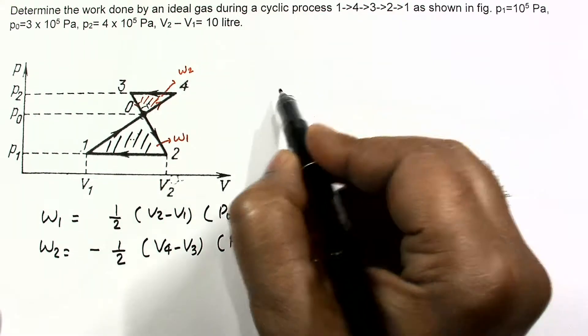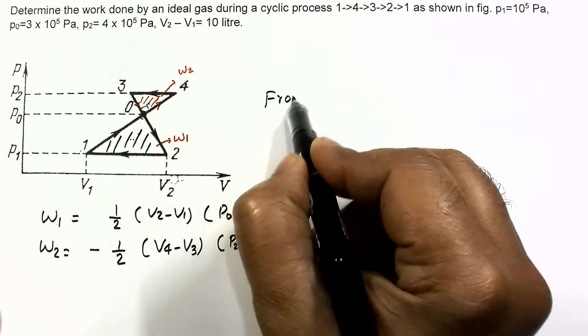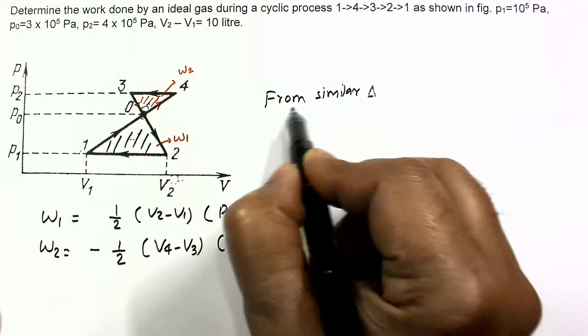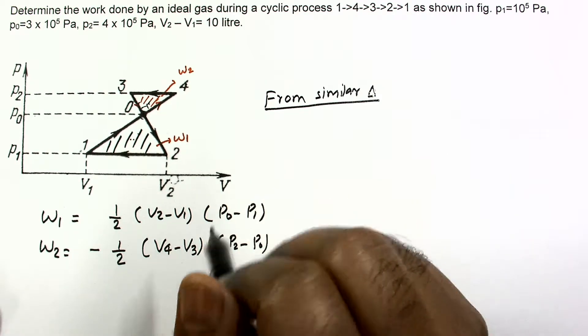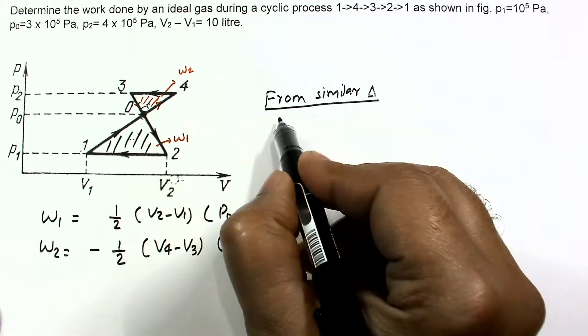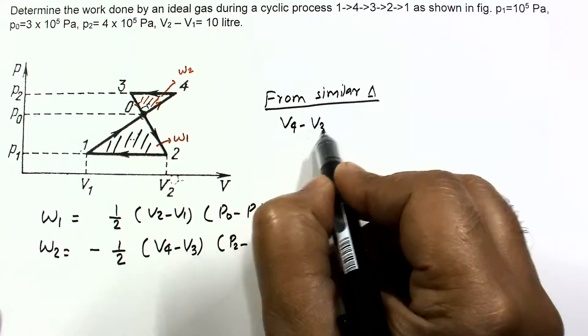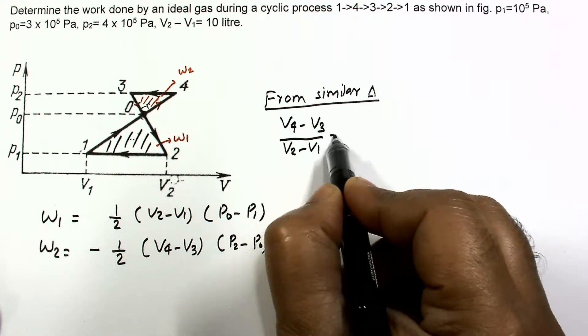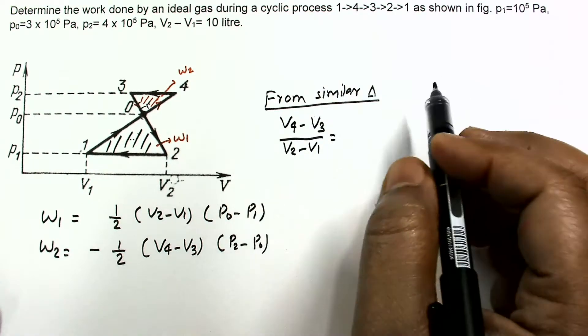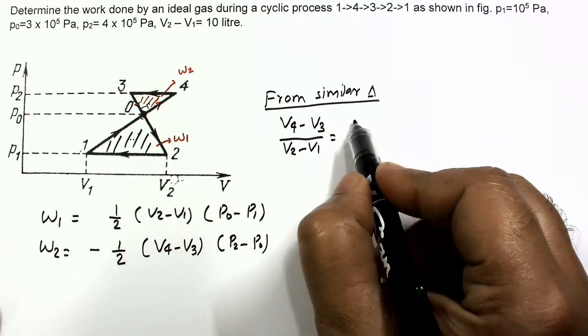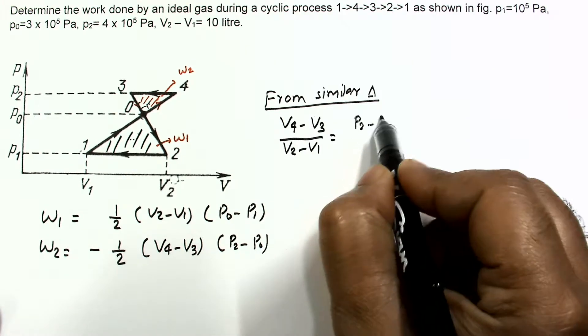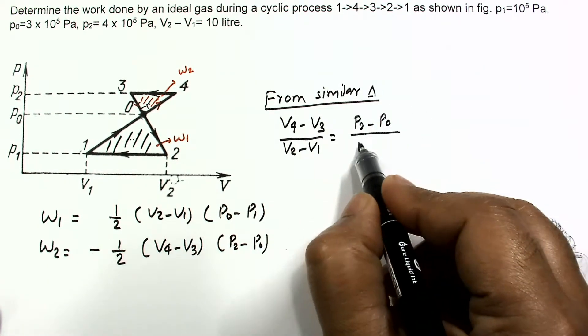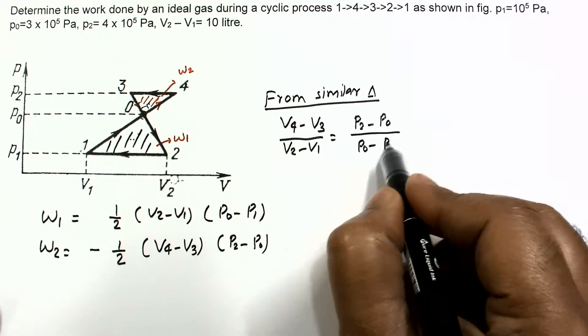So from similarity, from similar triangles, we can write V4 minus V3 divided by V2 minus V1, this is equal to P2 minus P0 divided by P0 minus P1.